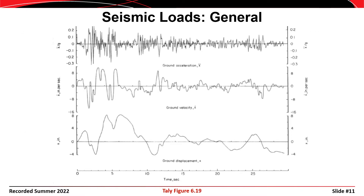A seismograph produces records of displacement, velocity, and acceleration. If we take the derivative of displacement we get velocity, and the derivative of velocity gives acceleration. The top record is ground acceleration, the second is ground velocity, and the bottom is ground displacement. Ground acceleration records are typically normalized by the acceleration of gravity, G.